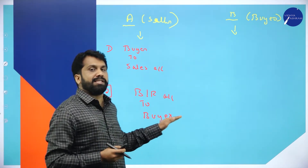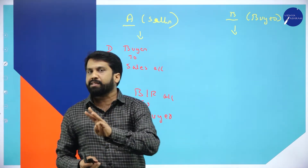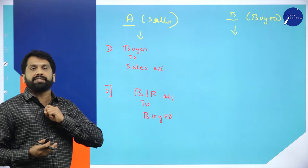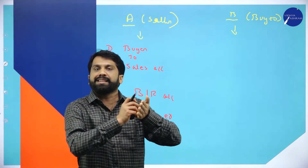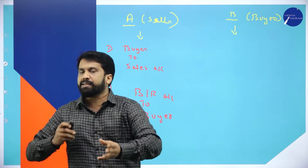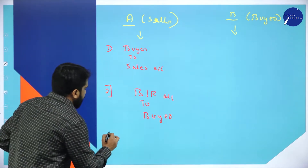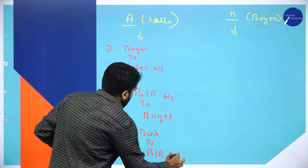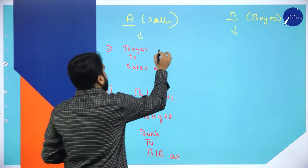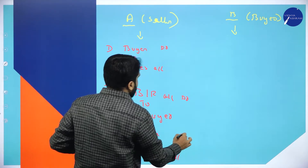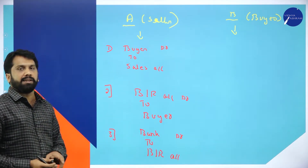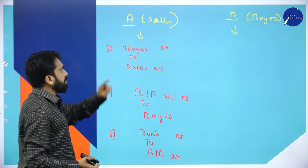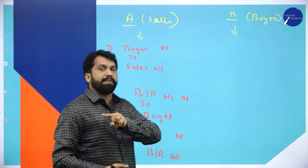This bill is valid for how many months? As per the agreement, it may be two or three months. Once the end of the third month comes, the bill will be converted to cash — he will pay the cash and take back the document. So the third journal entry will be: Bank account debit to Bills Receivable account. These three journal entries come in the books of the seller.